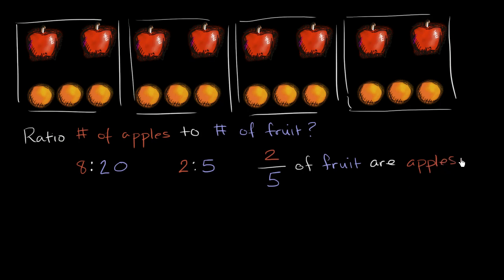So once again, this is introducing another way of representing ratios. We could say that the ratio of apples to fruit, once again, it could be two to five like that. It could be two—instead of putting this little colon there, we could literally write out the word to. Two to five.